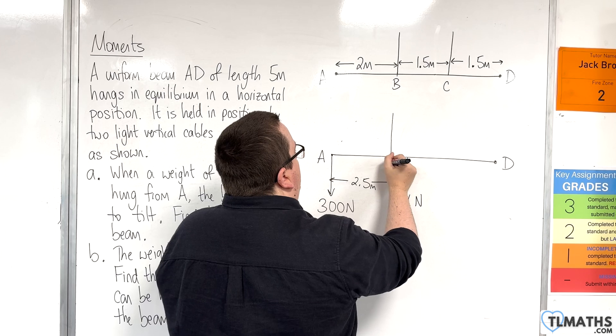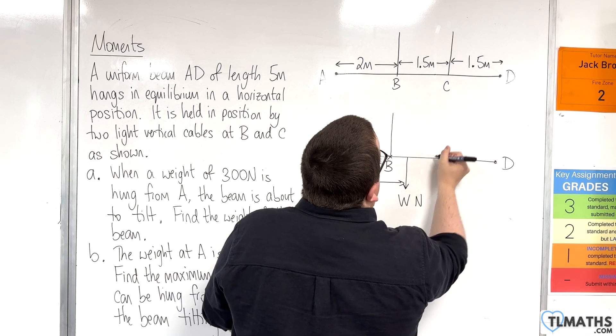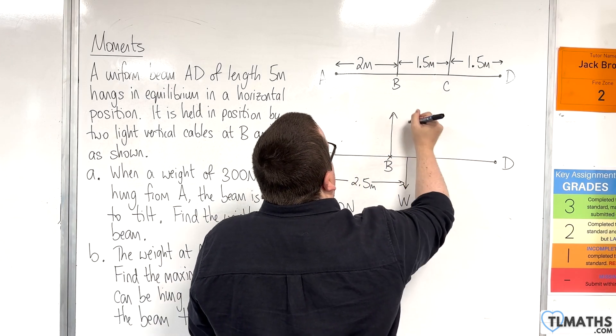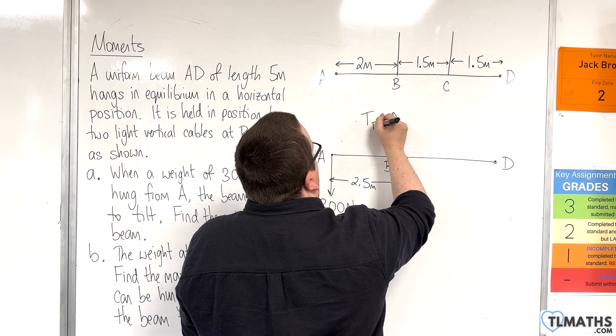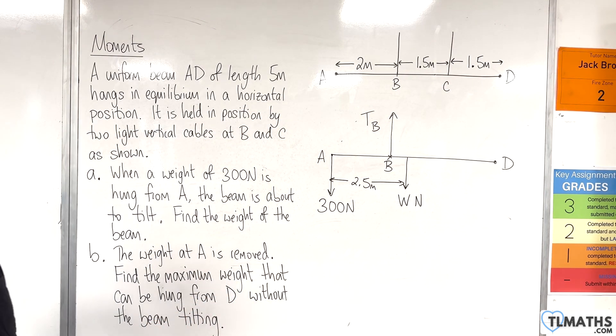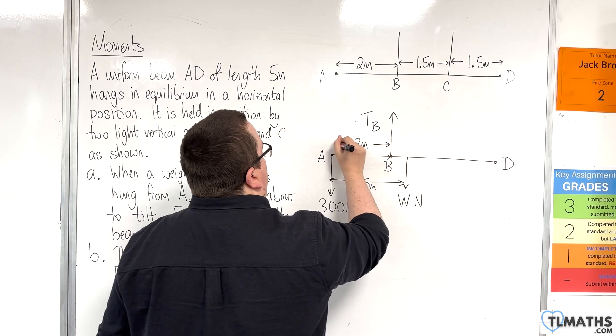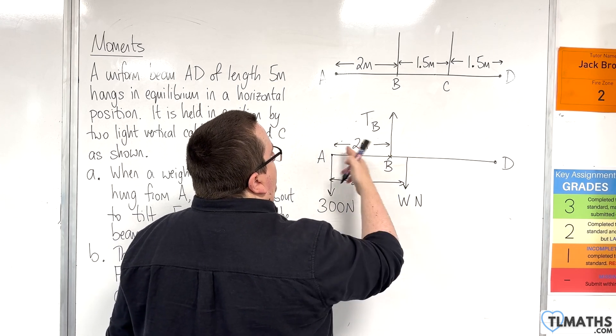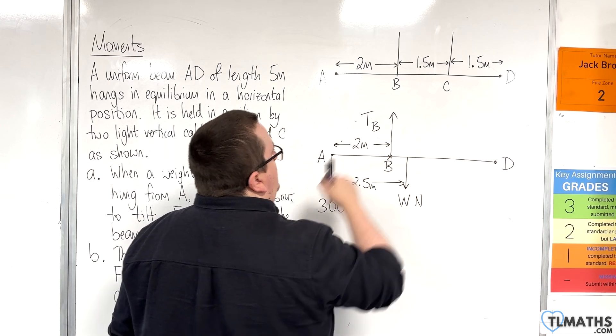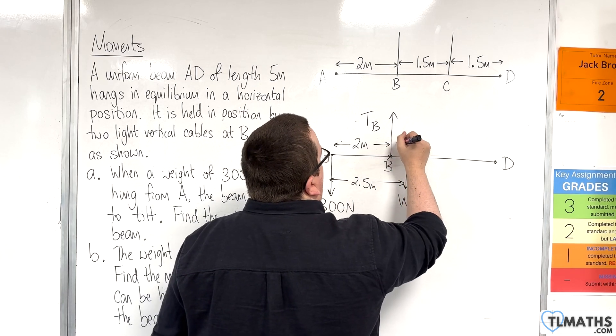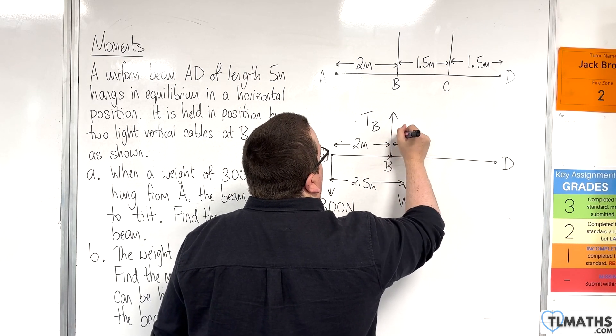So the only tension we need to worry about is at B. So here's B. We can ignore the tension at C. So we can call that tension at B. We know that this is 2 metres. So if that's 2 metres, then this bit here has just got to be half a metre. So that distance is one half of a metre.